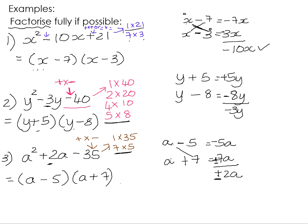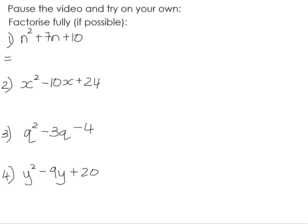In your homework book, there are some examples for you to try on your own, so please pause the video and try these yourself. Number 1: n squared plus 7n plus 10. We know it's going to be n times n. The positive 10 means it's a positive times a positive or a negative times a negative. Two negatives would never add up to a positive, so it's going to be plus and plus, and the factors of 10 that add up to 7 are 2 and 5.